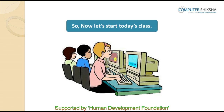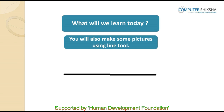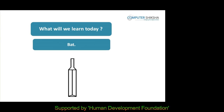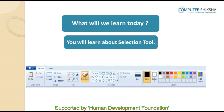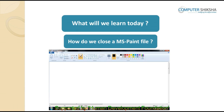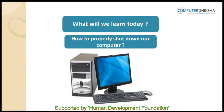Let us begin with today's course. During the last class, you learned about using the eraser tool. Today, we will all practice the use of the eraser tool. Using the line tool, you will also make some pictures — you may choose to make pictures like a house, star, bat, etc. Using the selection tool, you will learn to erase things. We will also learn how to close an MS Paint file and how to shut down the computer.